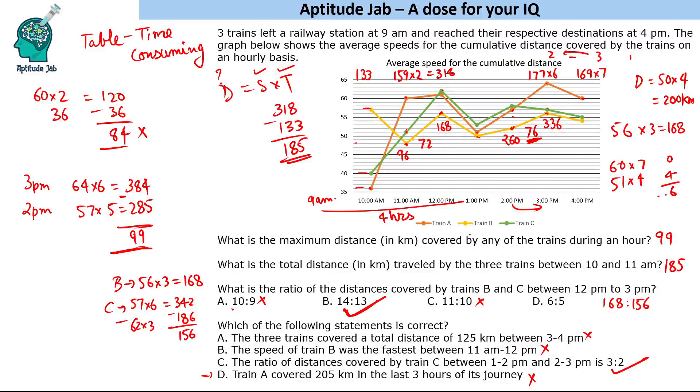If you want to verify: C between 1 and 2 and 2 and 3. At 1 it is 53 into 4, which is 212. This is 58 into 5, which is 290. And this is 57 into 6, which is 342. So the distance between these two intervals is 78, and between these two intervals the distance is 52. So the ratio is 3 ratio 2. This is correct.